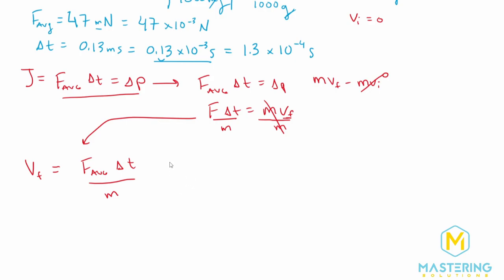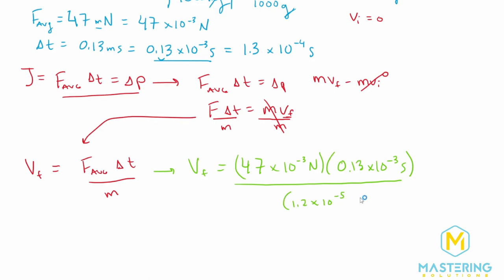So now we can plug everything into our equation. So the final velocity is equal to the average force in SI units, which we said was 47 times 10 to the negative 3 newtons, times the change in time, which we said was 0.13 times 10 to the negative 3 seconds, all divided by the mass, which we said was 1.2 times 10 to the negative 5 kilograms.